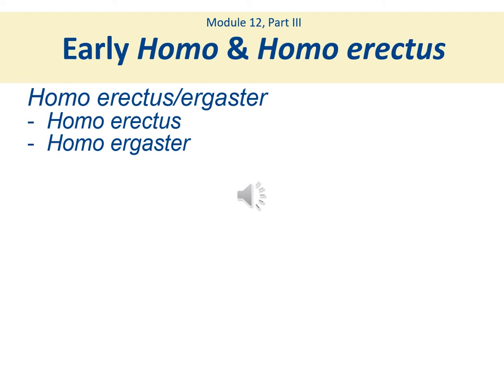The last part of module 12 covers Homo erectus. Homo erectus is one of the most fascinating species in the genus Homo because it highlights a number of innovations, biologically and culturally, that we can see are most like us. You can see with Homo habilis and rudolfensis it's not quite us completely anatomically, but you get that with Homo erectus or ergaster — and I'll explain the difference between the two as we go along.